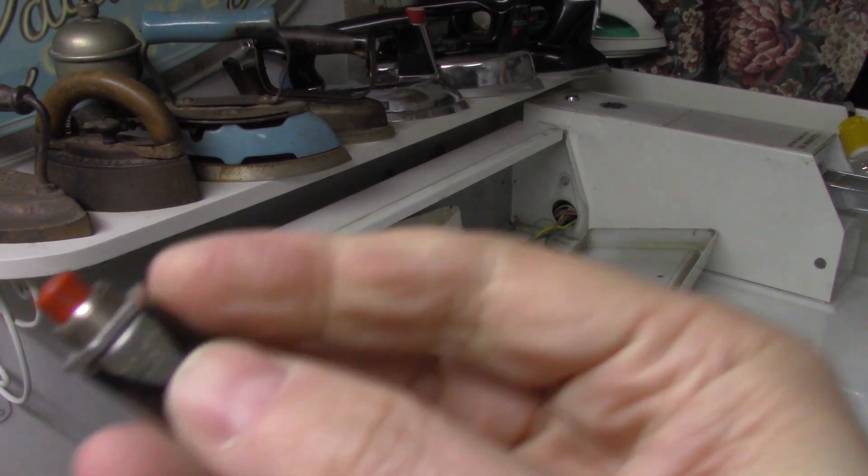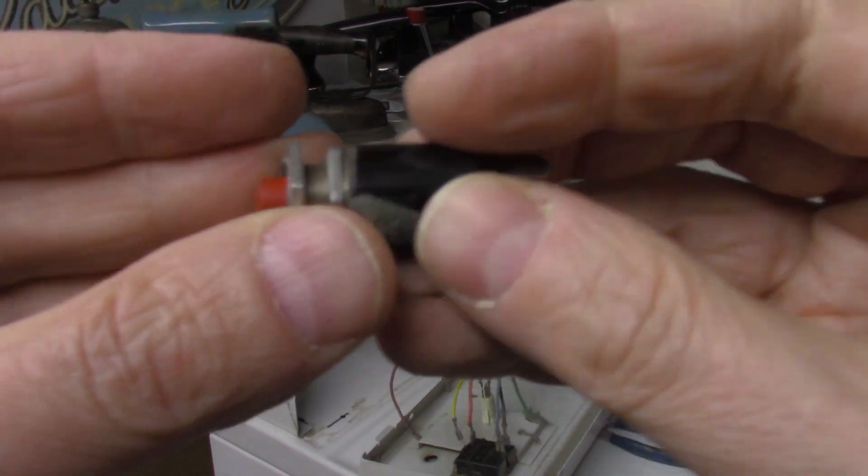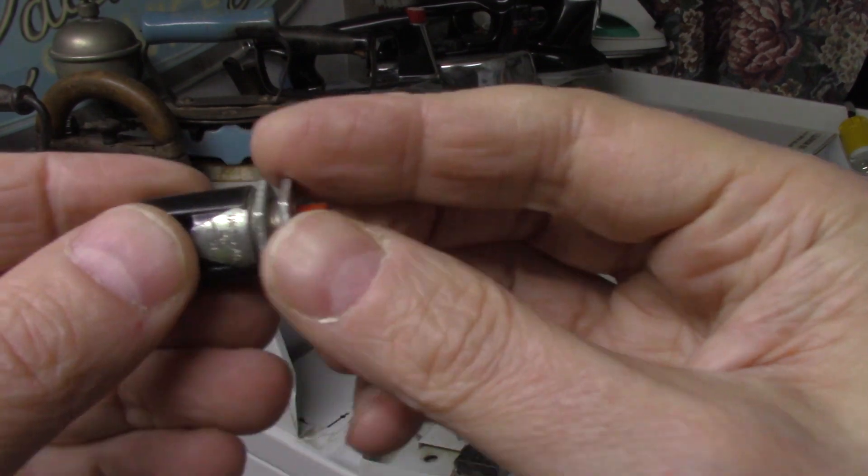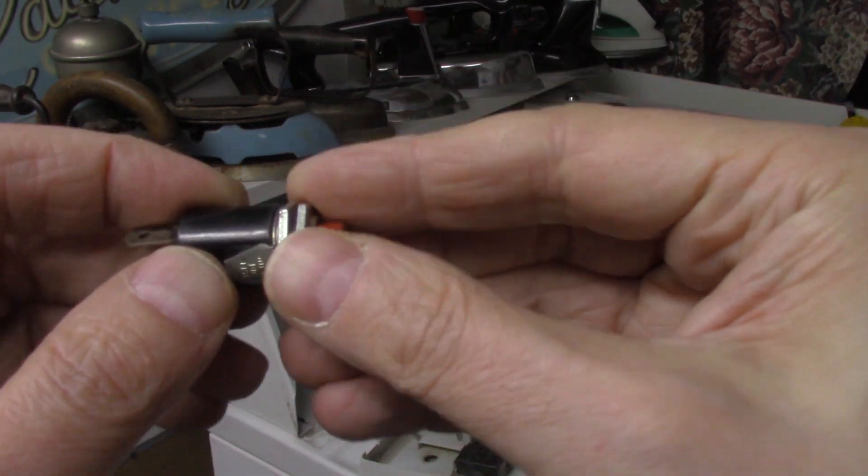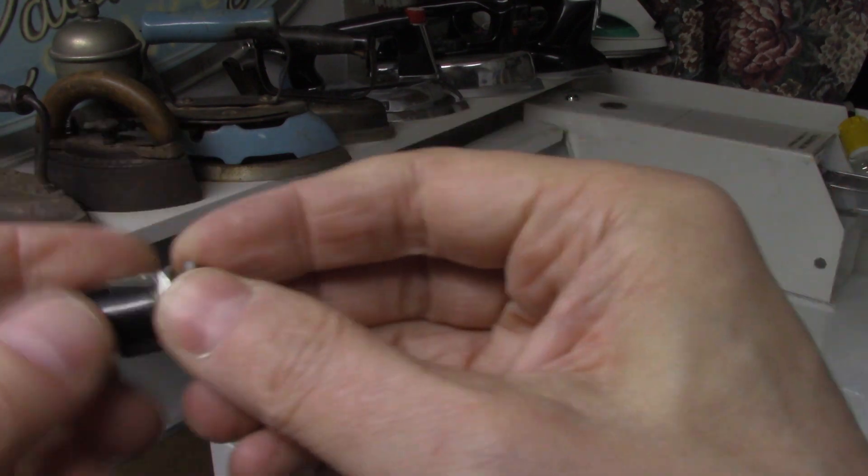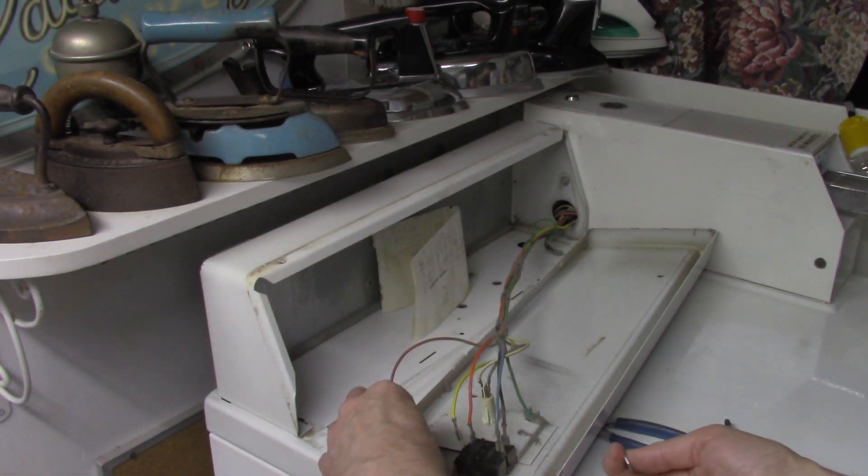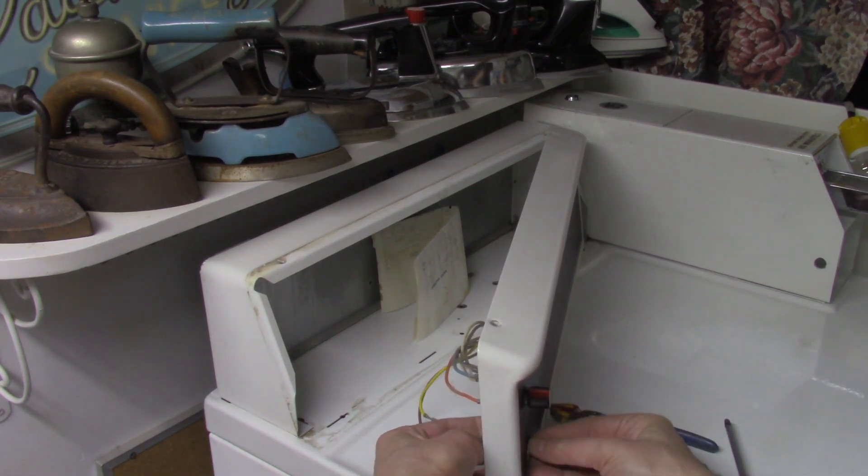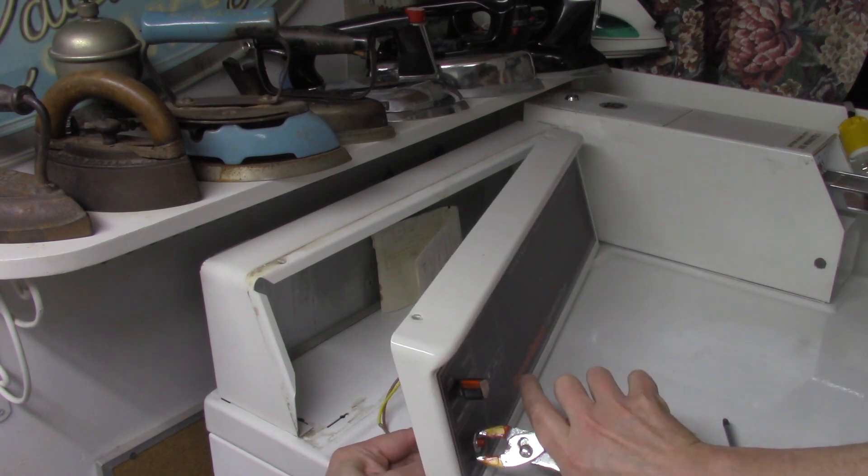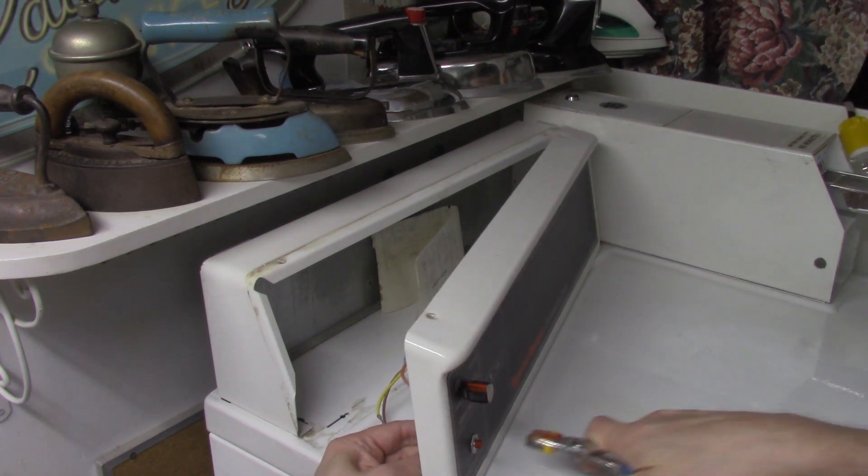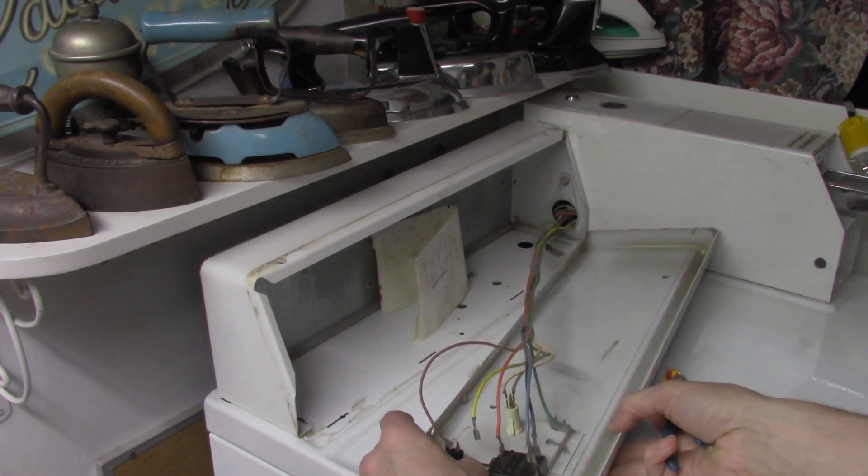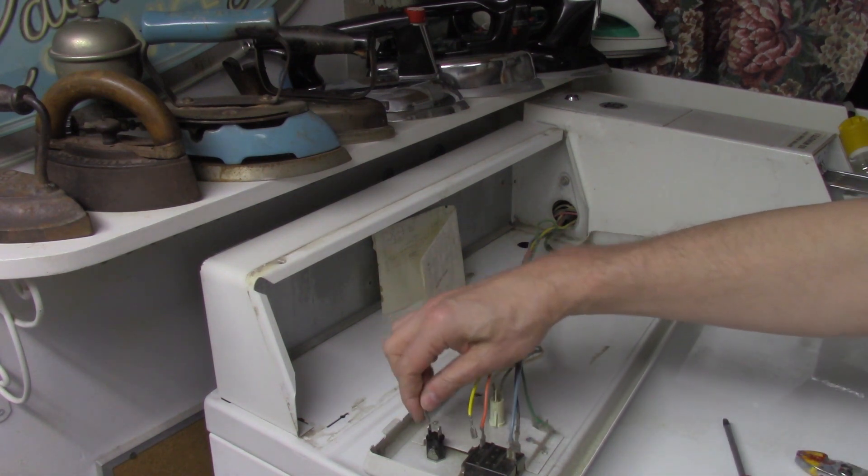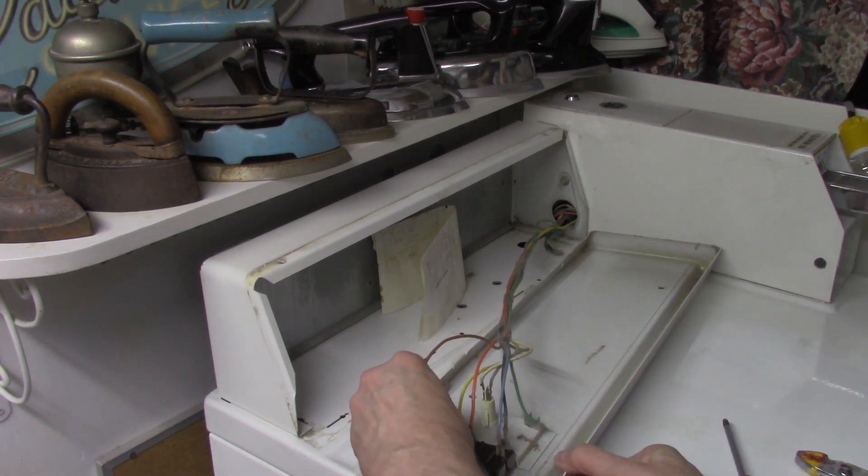The old switch had a double nut here so you can adjust how far the switch appears on the surface. You want to adjust the switch so it looks neat on the machine when it's put back in service. It looks like it takes a standard 1/4 inch spade connection so I'll put the pieces back on.